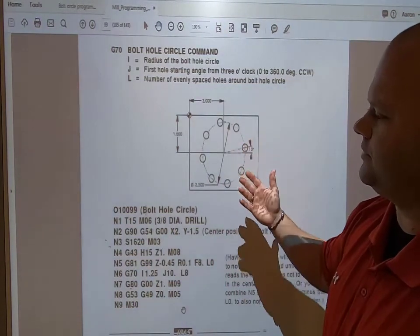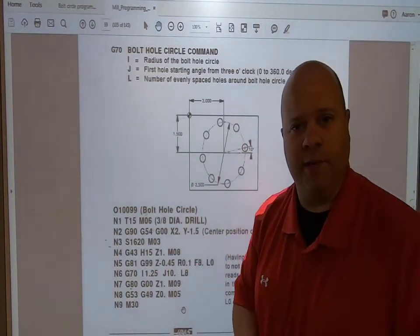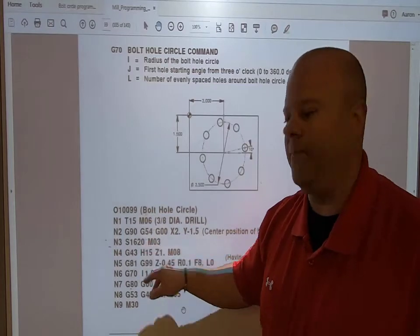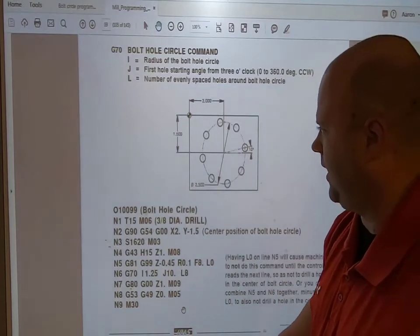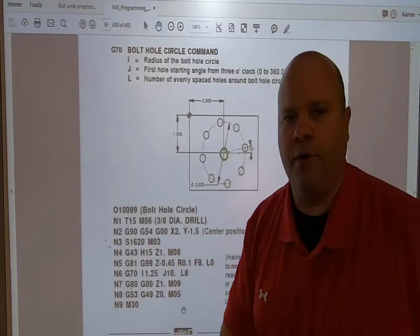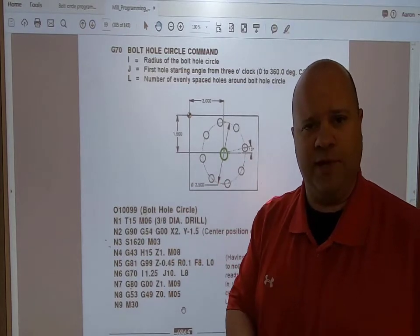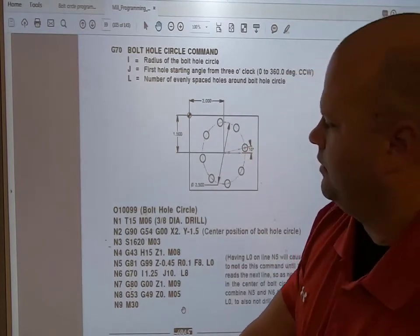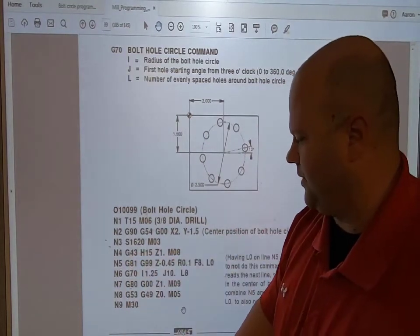Looking at this sample, I have another one we're going to use in our Haas simulator, but this shows we're going G90 G54. That's our work offset. We're going up X two inches and Y minus. That's the center point of the bolt hole circle, then turning on the spindle and calling up the tool length offset.